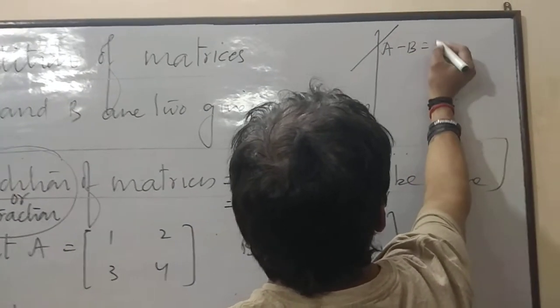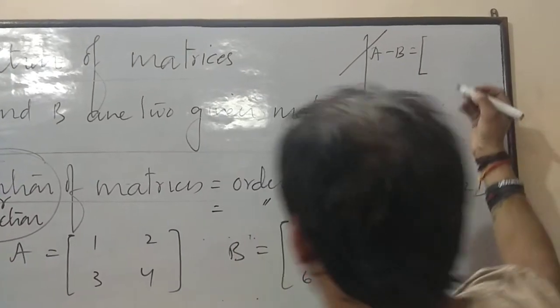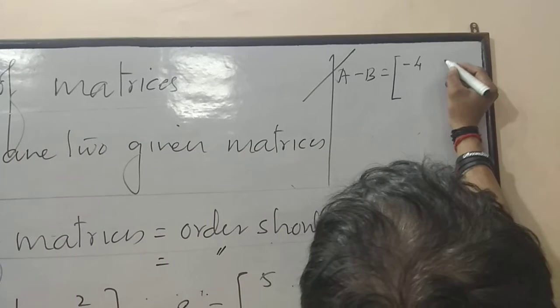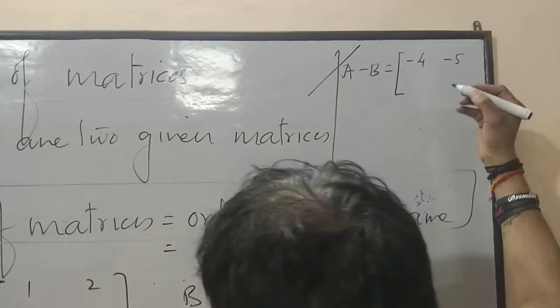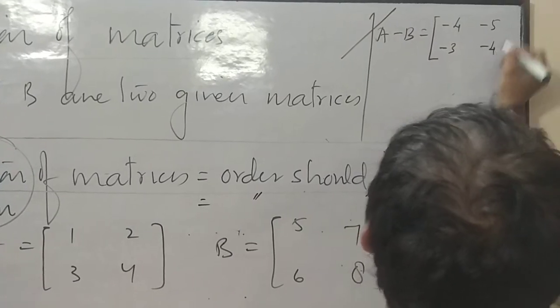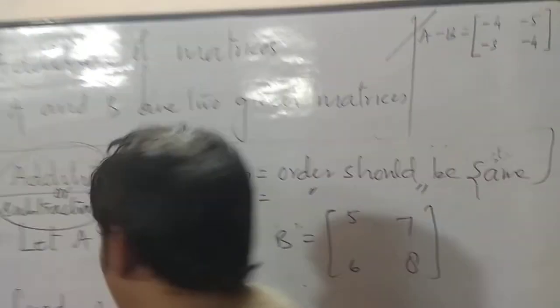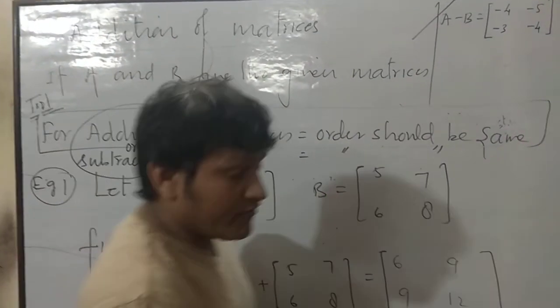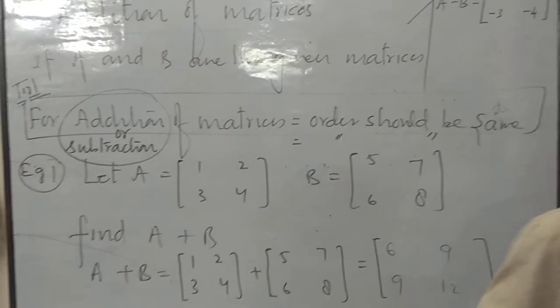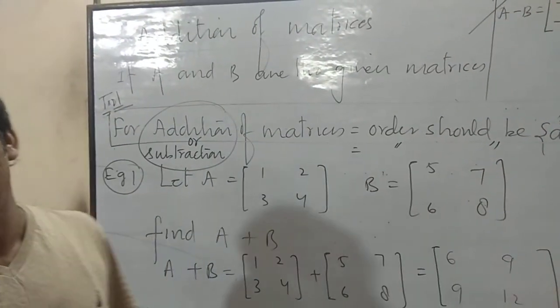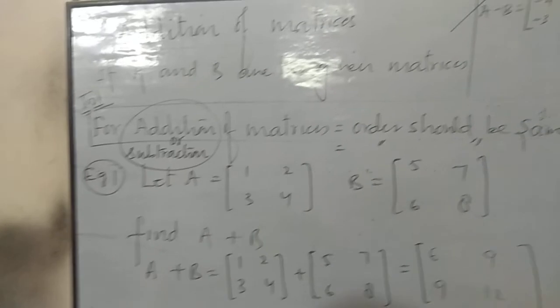A minus B equals. 1 minus 5, minus 4. 2 minus 7, minus 5. 3 minus 6, minus 3. 4 minus 8, minus 4. So listen very carefully. There is no need to learn the example. You just go for the concept. For addition of two matrices or for subtraction of two matrices always order should be same.